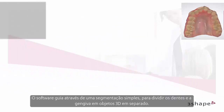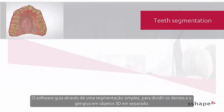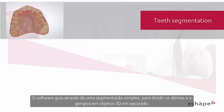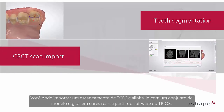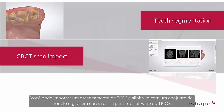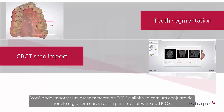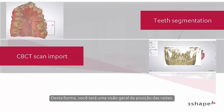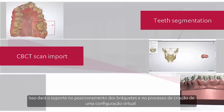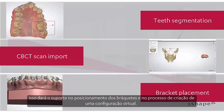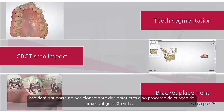The software guides you through a simple segmentation to divide teeth and gingiva into separate 3D objects. You can import a CBCT scan and align it with a real color digital model set from the Trios software. In this way, you will have an overview of the root positions, which will support you in bracket positioning and the process of creating a virtual setup.